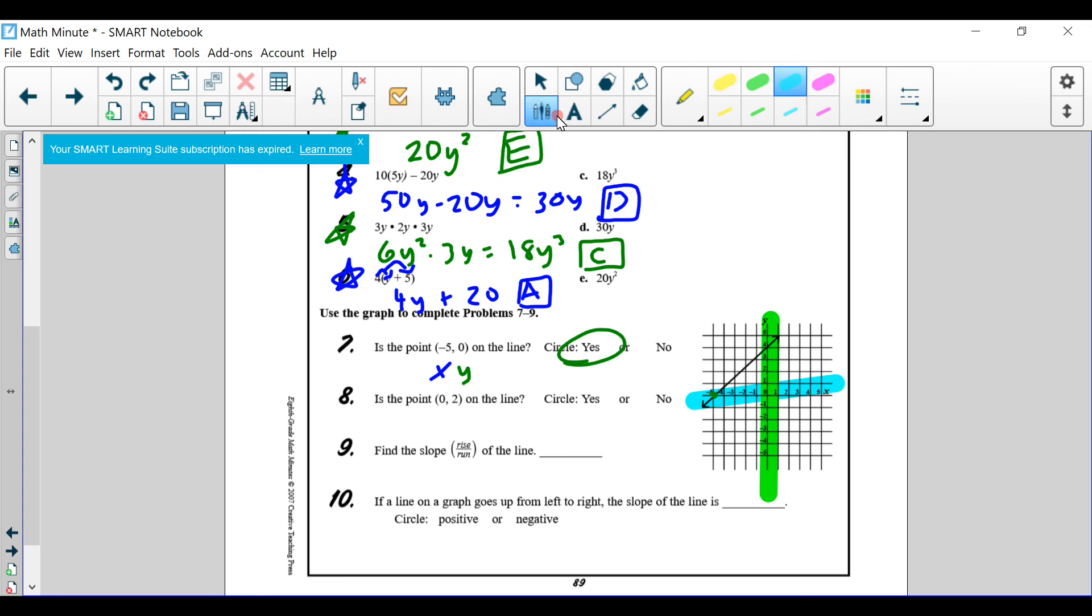Now we're gonna go ahead and talk about the next point. The next point is 0, 2. So we look at 0, 2. And we see that it is, we don't run anything, we don't go up anything, run over anything, but we do go up 2. And that is here. Notice this point that I put here. Is that on the line? No, it's not. So we go false or no.